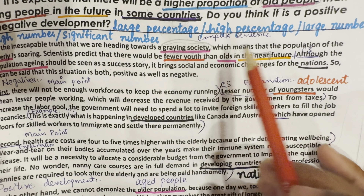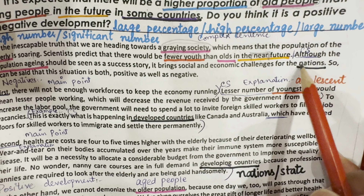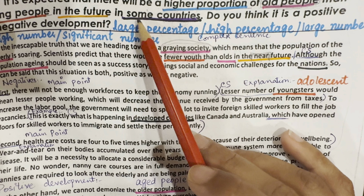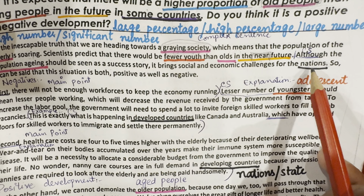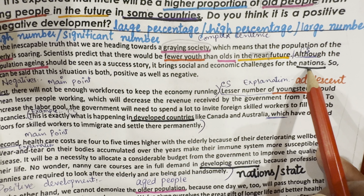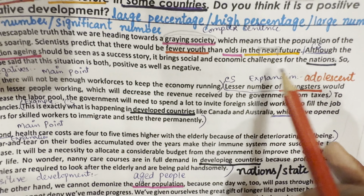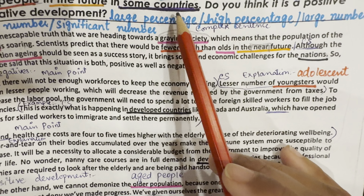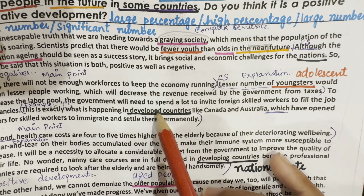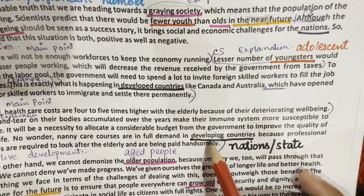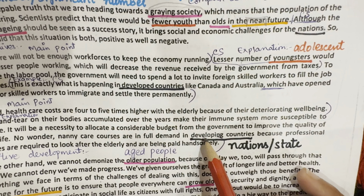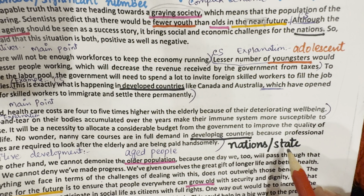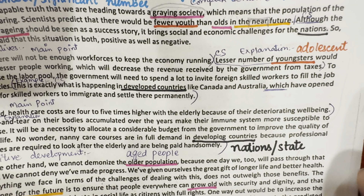For 'in the future,' while paraphrasing in the introduction, we don't write 'in the future.' Instead, we add the word 'near' and write 'in the near future.' This is a good way of paraphrasing — we have added a word to create 'in the near future.' You have to paraphrase like this.